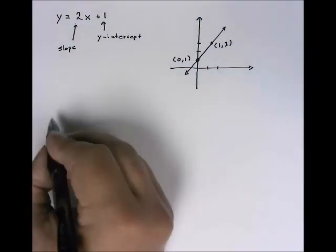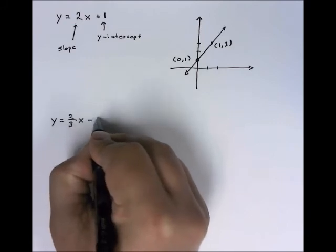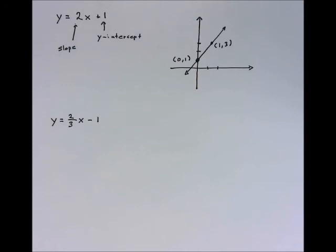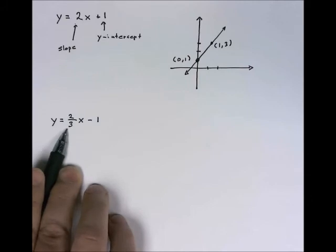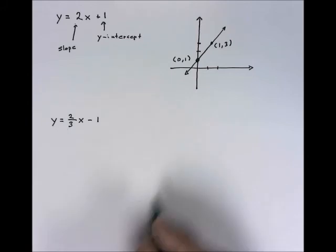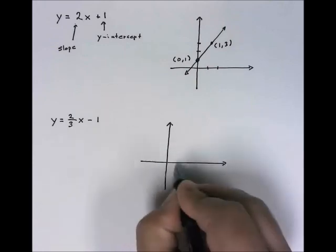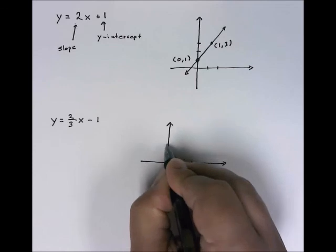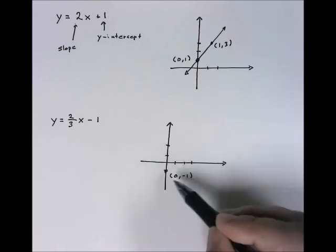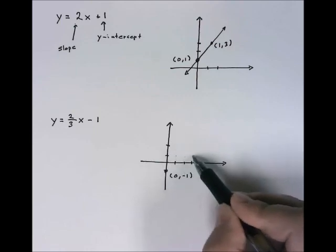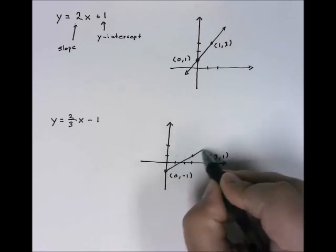Let's try 1 with fractions now. Let's try y equals 2 thirds x minus 1. Same basic idea, except we're going to have a y-intercept of negative 1, and a slope of 2 thirds, which means 2 units up, 3 units over to the right. We're going to graph it the same way. We're going to start at our y-intercept of 0, negative 1. And from the y-intercept, we're going to go 2 units up and 3 units over, which brings me to the point 3, 1. And then connect the dots.